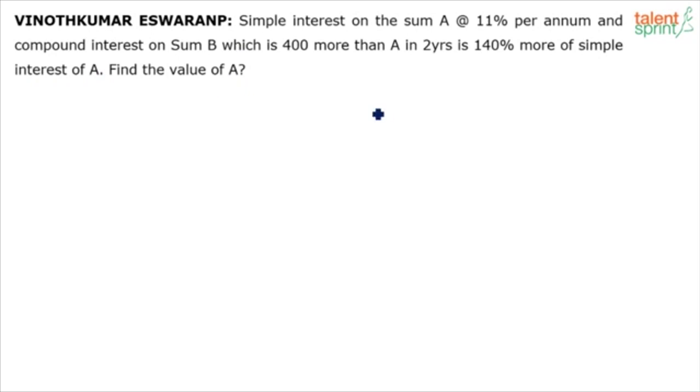Basically he is talking about 2 cases here. Case 1 where we are measuring simple interest on sum A at 11% per annum for 2 years. I am assuming 2 years is common for both the cases. And in case 2 we are talking about compound interest on sum B which is 400 more than sum A in same 2 years and this compound interest is 140% more of simple interest. So find the value of A.